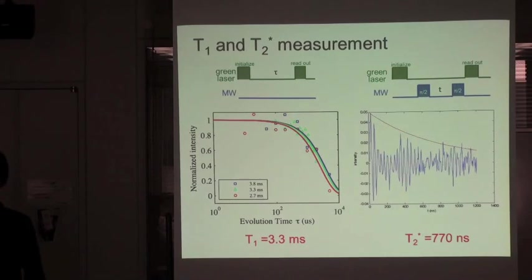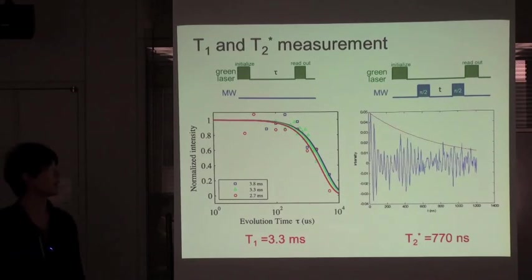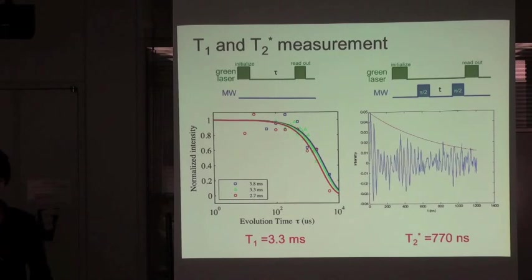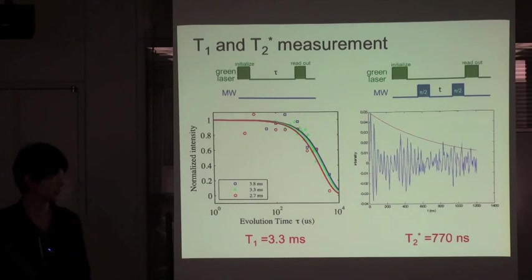I briefly show you another spin properties, T1 and T2 star. The average value of T1 was 3.3 millisecond and T2 star was 770 nanosecond.